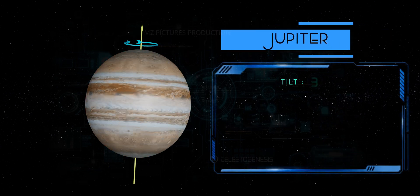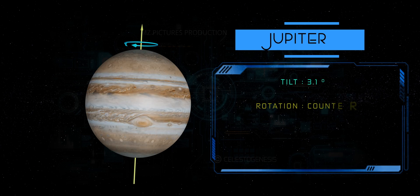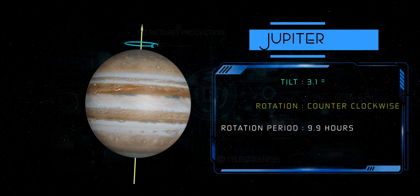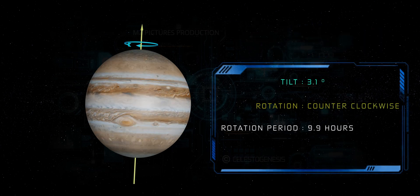Jupiter. Jupiter has the fastest rotation in the solar system, taking just about 10 hours to complete one rotation. It rotates counterclockwise, prograde.